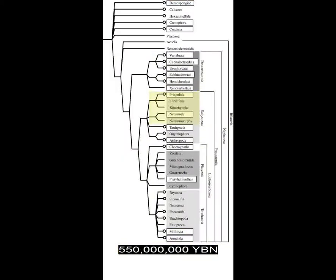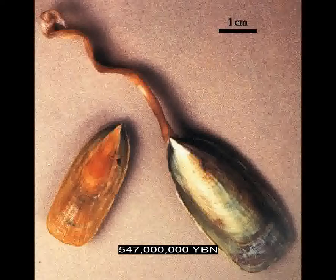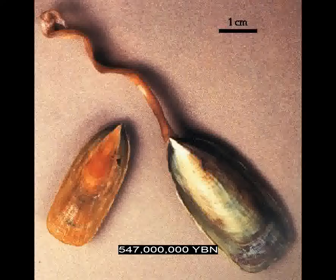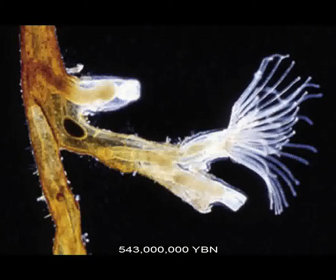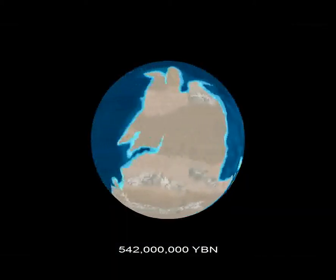The ecdysozoa Aschelminthes evolves—ancestor of the worms, nematodes, and priapulids. The lophotrochozoa phylum Brachiopoda evolves—marine invertebrates with bivalve dorsal and ventral shells enclosing a pair of tentacled, arm-like structures used to sweep food particles into their mouth. Segmentation evolves: body parts are repeated serially. The lophotrochozoa phylum Bryozoa evolves—the bryozoans, or moss animals. Bryozoans are tiny animals that grow in colonies that look like branches. The end of the Precambrian. The end of the Proterozoic and start of the Phanerozoic eon, and the end of the Ediacaran and start of the Cambrian period.